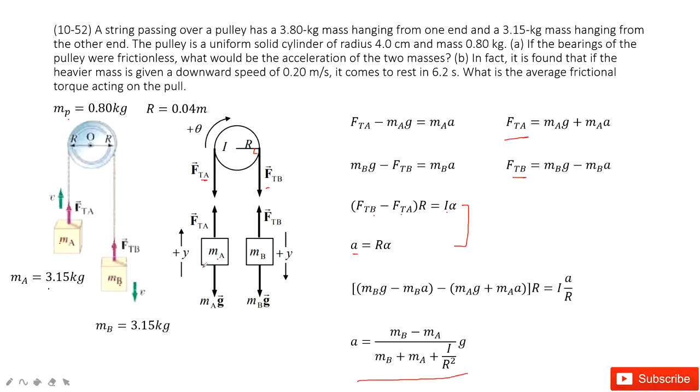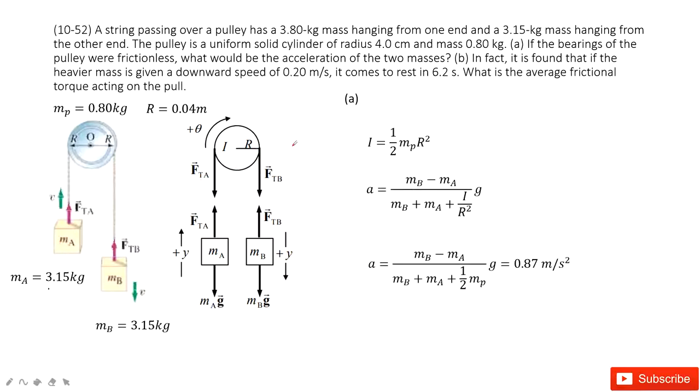In this function, you can see mA is given, mB is given, and also g is a constant, R is given. It looks like you need to find I first. This I is the moment of inertia for the pulley. How can we do that? This I is one half mp R squared.